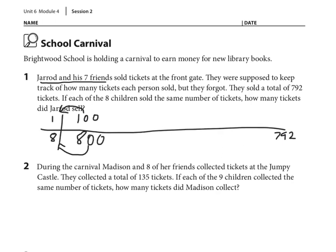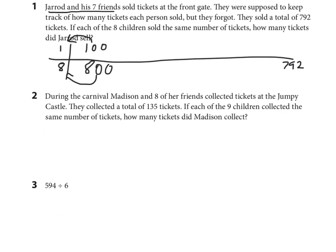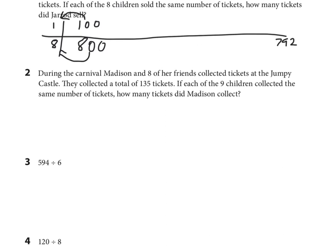Madison and eight of her friends—so nine children—collected 135 tickets. Why don't we use an array for this one? This was nine children, we're going for 135 tickets. Just go to 90 first and then figure out what else you need to get to 135.